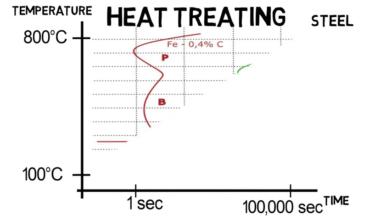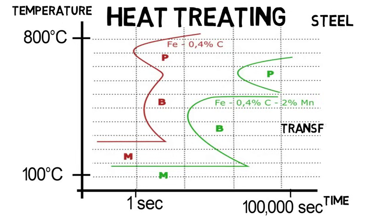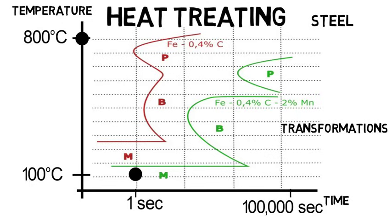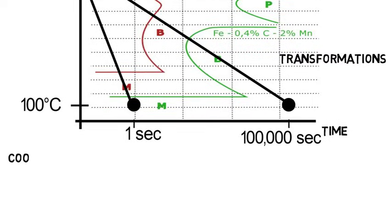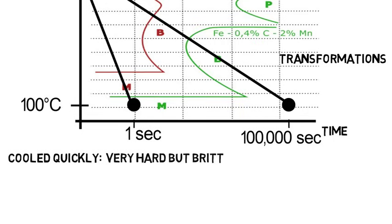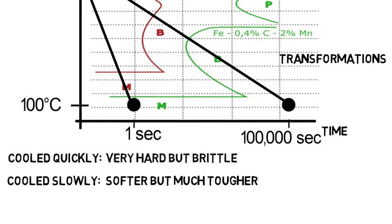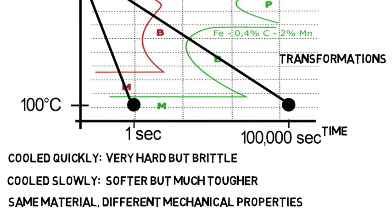On the graph you'd be given different transformation curves — don't worry about what these are right now, just realize these represent different transformations the material can go through. Different materials have different-looking graphs. Let's say we heat steel to about 800 degrees Celsius, then cool it to 100 degrees Celsius in one second — very quickly. That line tells us which transformations the material goes through during cooling. This goes through different transformations than if we slowly cooled it over the course of about a day. If cooled very quickly, that might yield a very hard but brittle material. If you cool it slower, it may yield a slightly softer material that is much tougher and doesn't break easily. It's all the same material, but we can achieve different mechanical properties just by cooling it differently.